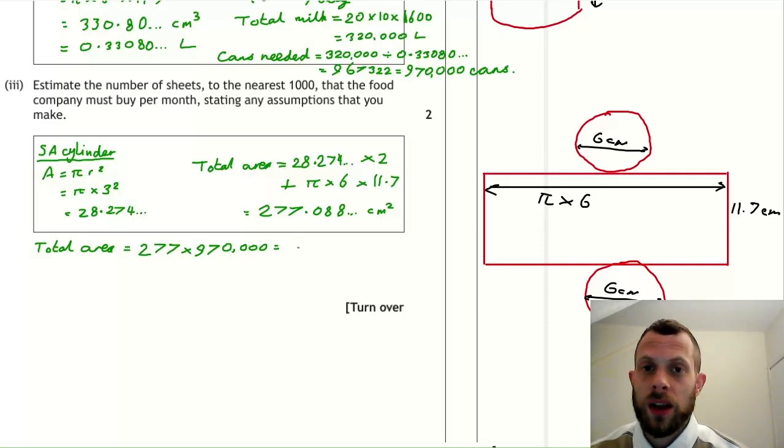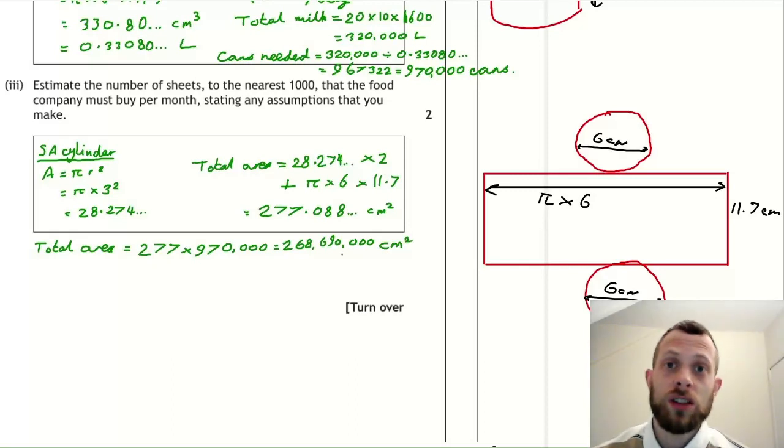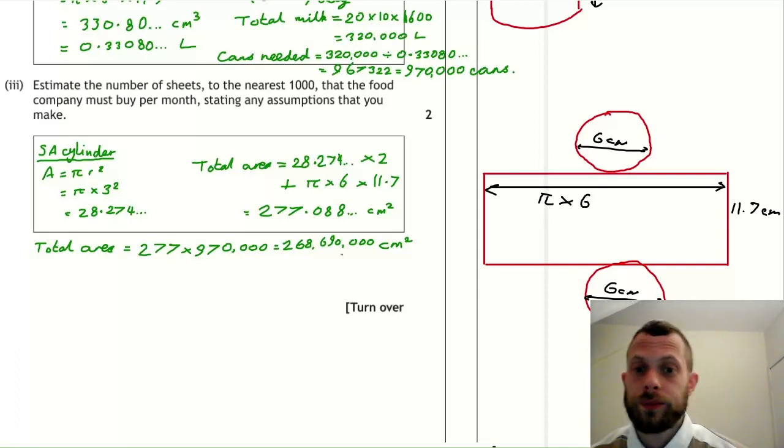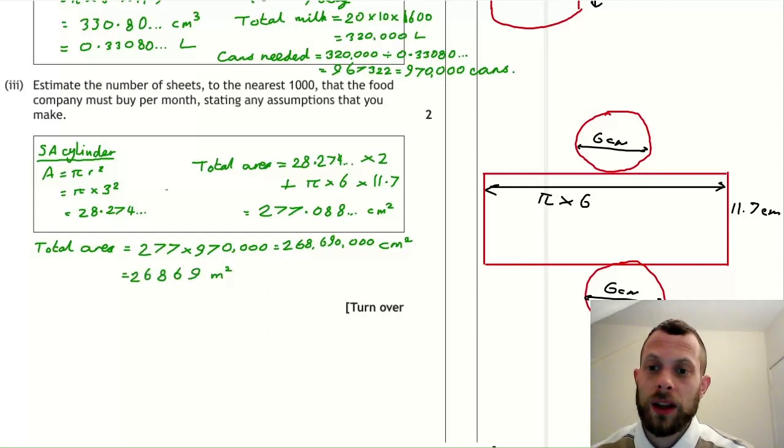So we get quite a large number here, 268,690,000 square centimeters. The reason this is such a large number is because square centimeters are quite a small area of measurement. So let's convert to square meters. And you'll actually divide by 10,000. So we will get 26,869 square meters.